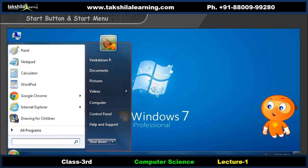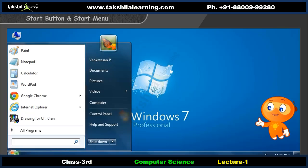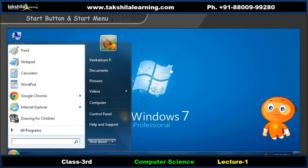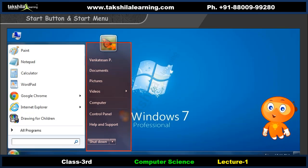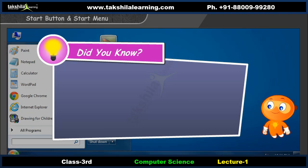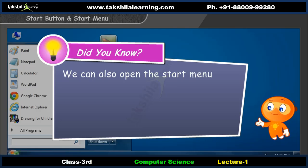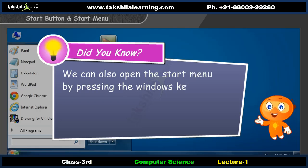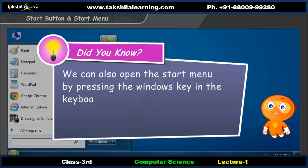The right pane provides access to commonly used files, folders, settings and features. You can also turn off your computer from here. Did you know? We can also open the start menu by pressing the Windows key on the keyboard.